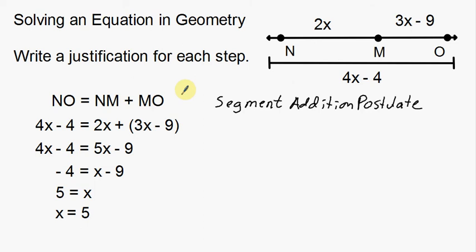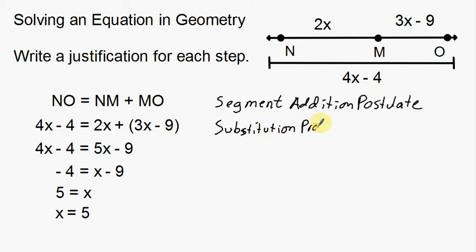Going from line 1 to line 2: instead of the segment letters, we're plugging in the expressions 2x, 3x minus 9, and 4x minus 4. This is the substitution property of equality — taking out the segment letters and plugging in the expressions.